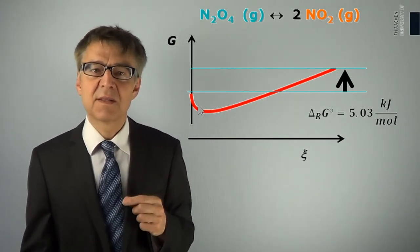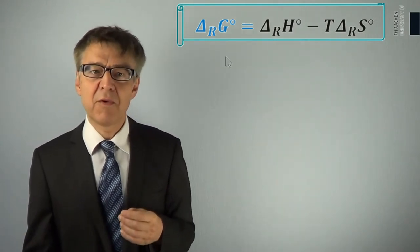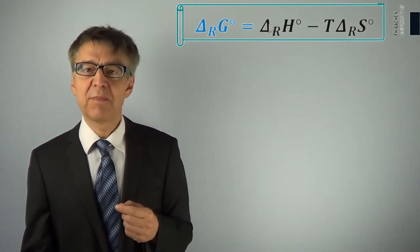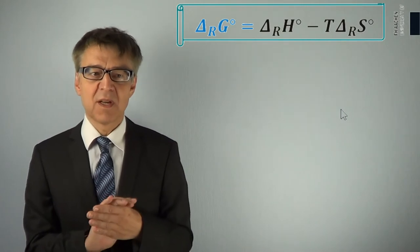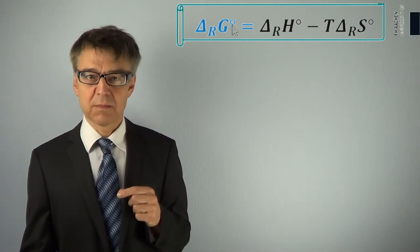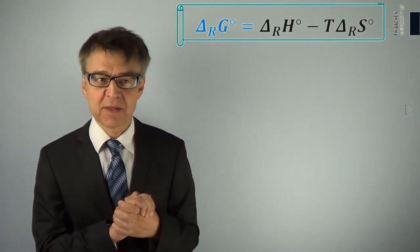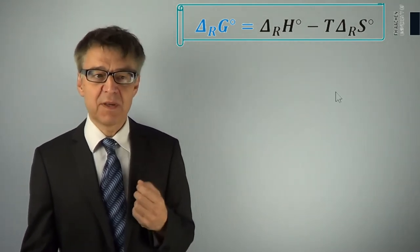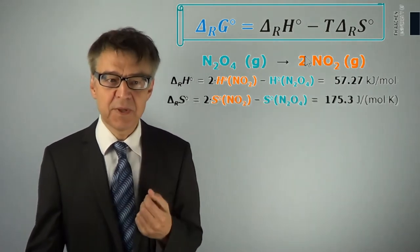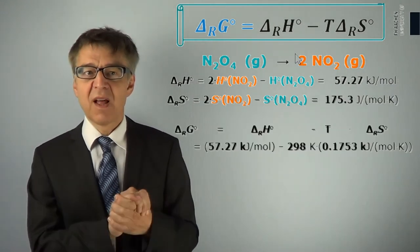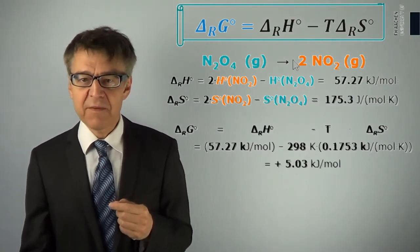To this state the system will voluntarily move. The Gibbs-Helmholtz equation allows the important variable delta G, the drive, to be calculated from the enthalpy change delta H and the entropy change delta S. Of particular importance is the standard drive, delta G0 — the Gibbs free energy difference between the pure reactants and the pure products. We will determine the standard drive for the example reaction. We first calculate the standard enthalpy, 57 kJ per mole, and the standard entropy, 175 J per mole per Kelvin. Then we calculate delta G0 at room temperature according to Gibbs-Helmholtz, ending up with the standard free reaction enthalpy of 5 kJ per mole.